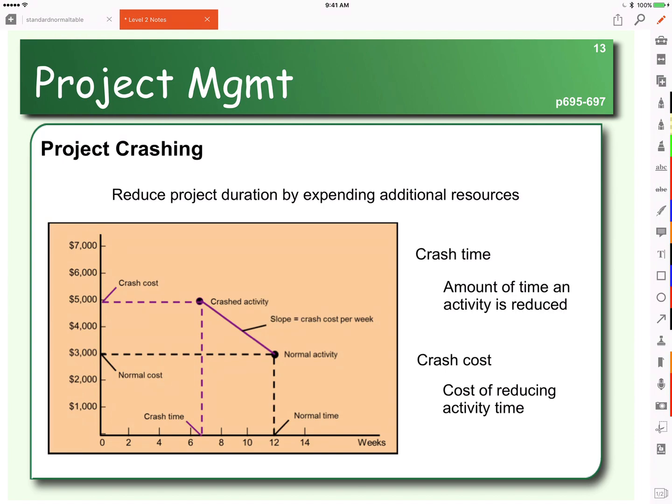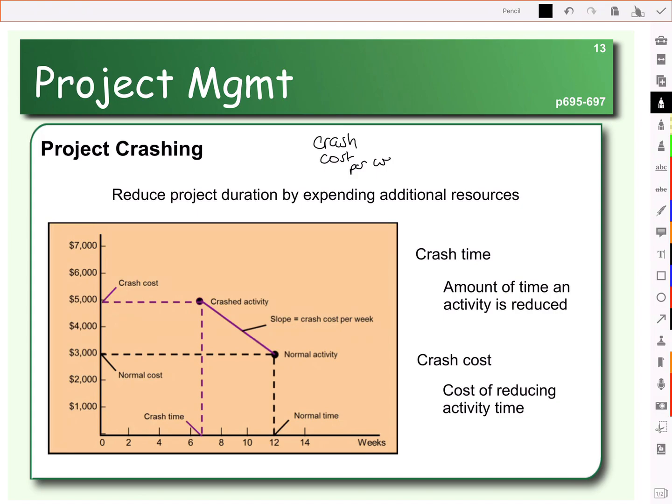So we can actually calculate our crash cost per week by looking at the crash cost and dividing it by the amount of time we can reduce the activity.